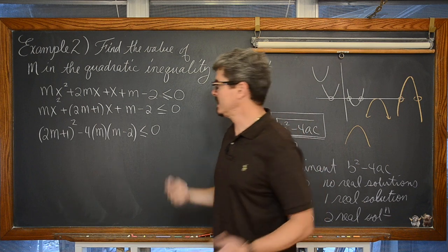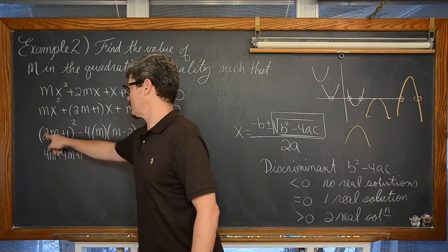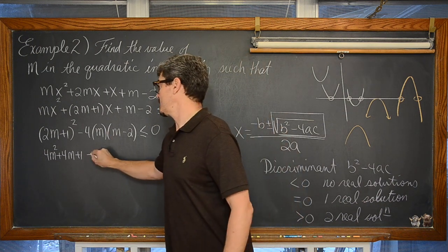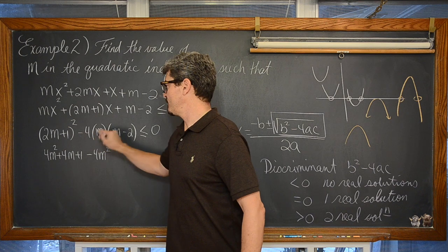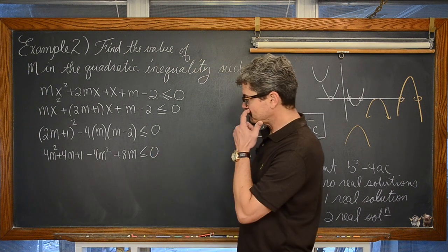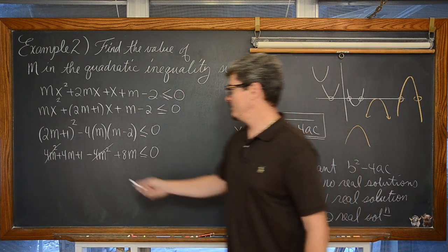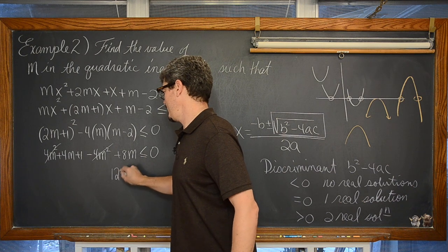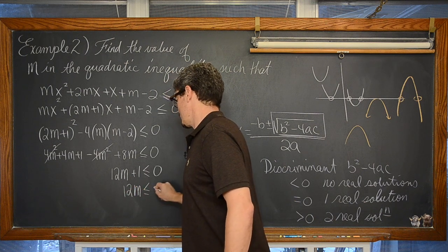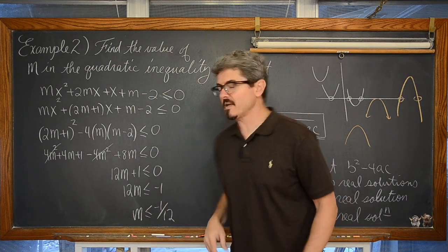And we are looking for this to be less than or equal to zero. We have an inequality with only one variable now. So we are looking at 4m squared plus 4m plus 1, distributing that binomial. We have negative 4m times m is negative 4m squared. We have negative 4m times negative 2 which is plus 8m. We are looking for that to be less than or equal to zero. The 4m squared and negative 4m squared cancel out. We have 4m plus 8m is 12m, plus 1 is less than or equal to zero. So 12m is less than or equal to negative 1, and m is less than or equal to negative one twelfth. And that is the end of the last example. I am Mr. Tarrou — BAM! Go do your homework!